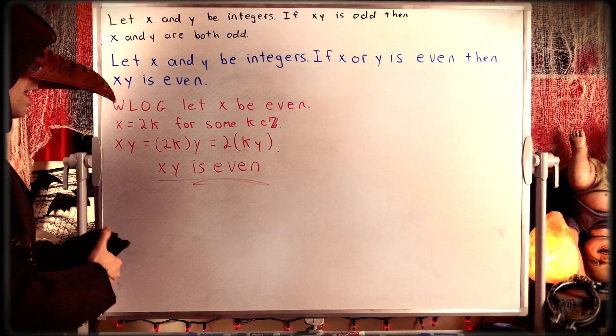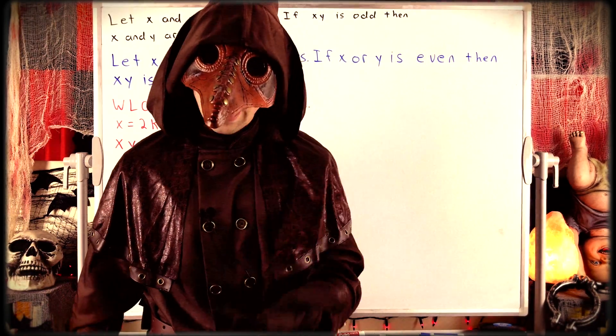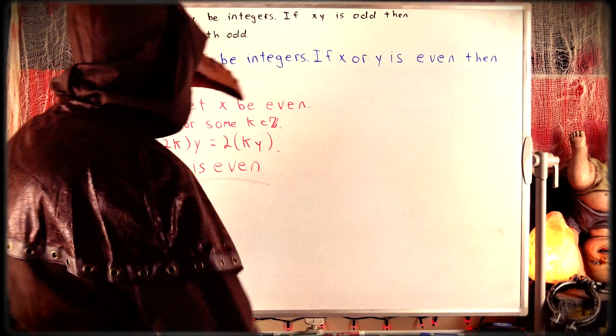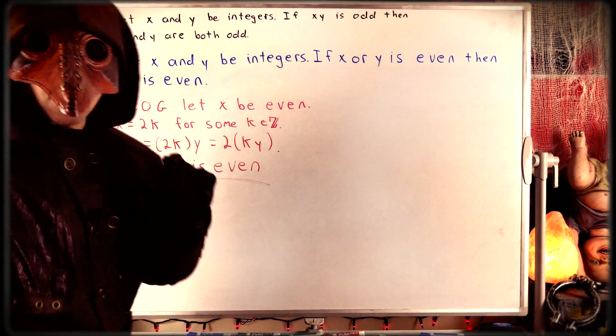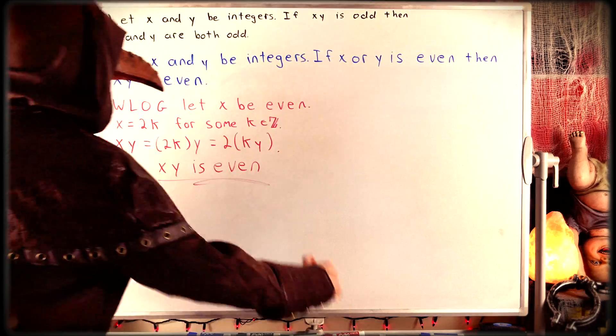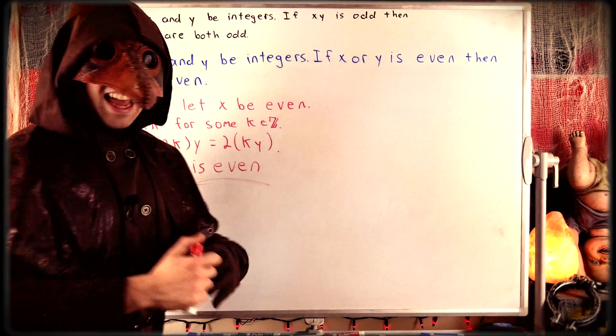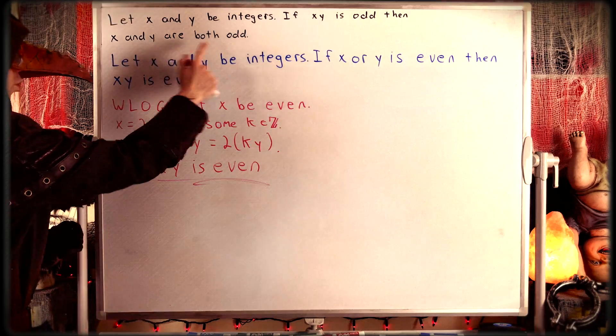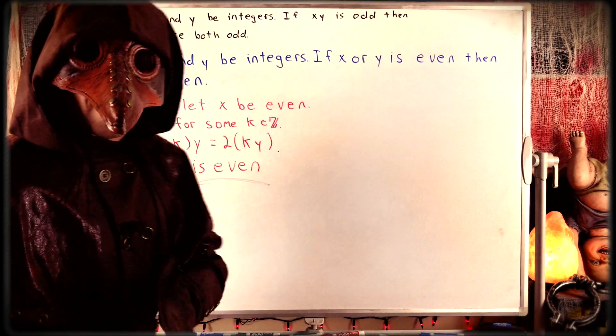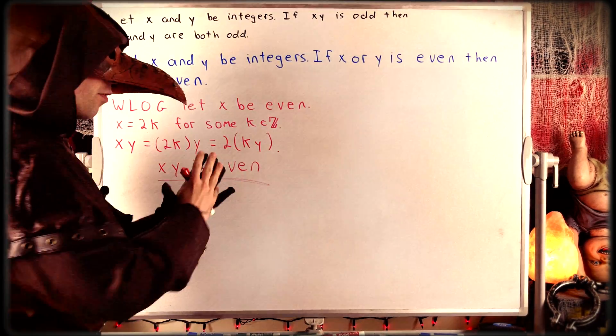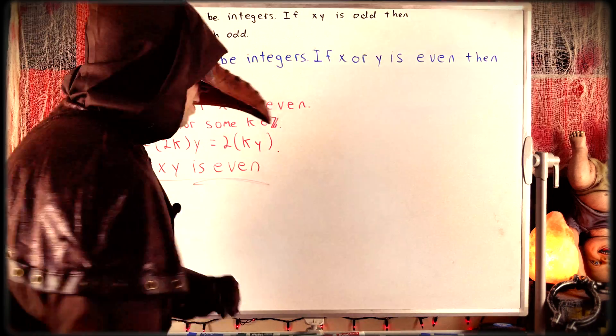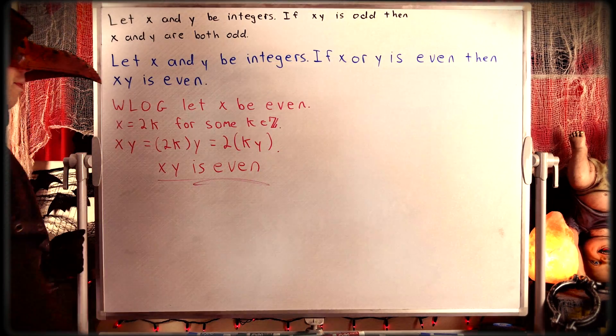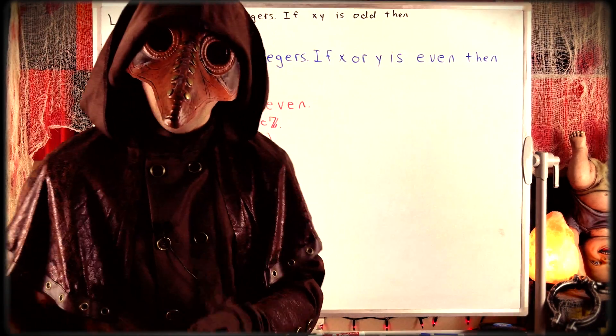We just showed that if at least one of x or y is even, then their product must also be even. So, if the product of two integers is odd, it must be the case that both of the integers are odd as well, which is the original statement we wanted to prove. Because if even one of the integers were even, then the product would have been even when we have that the product is odd.